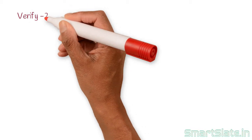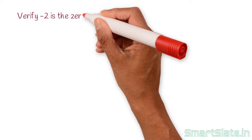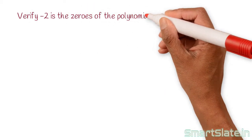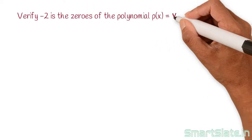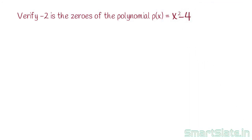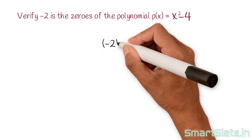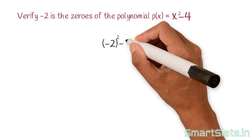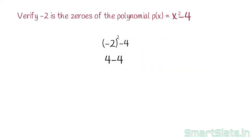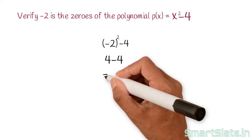Let's solve another example. Verify that minus 2 is a zero of the polynomial x squared minus 4. Replace x with minus 2: minus 2 squared minus 4, which is 4 minus 4. The answer is 0.